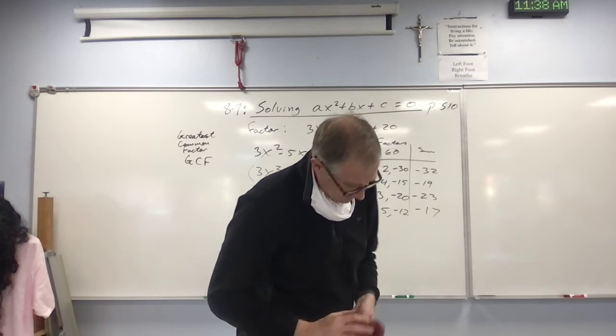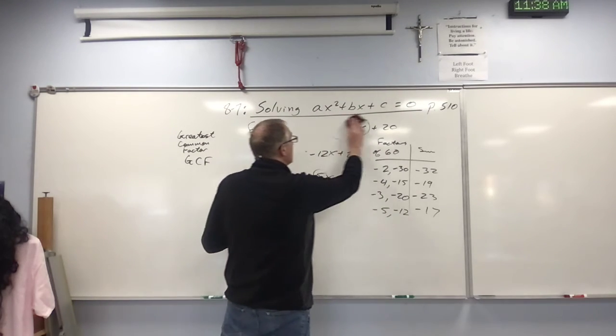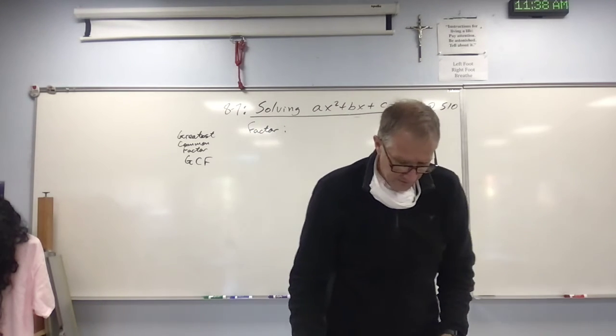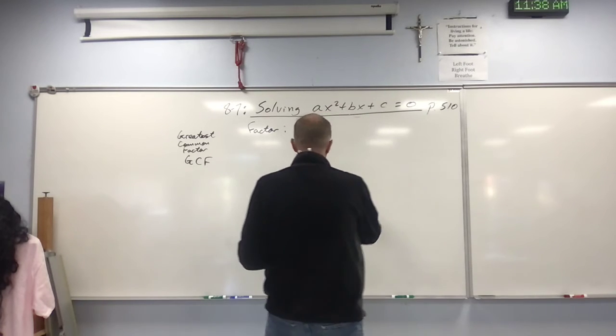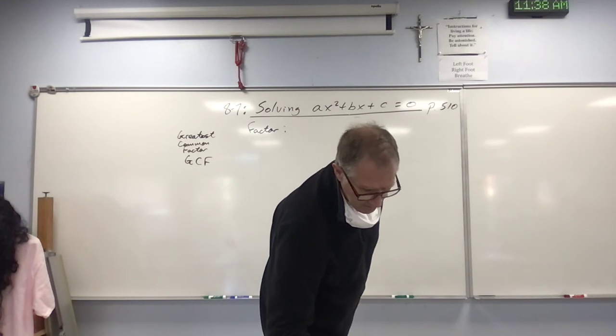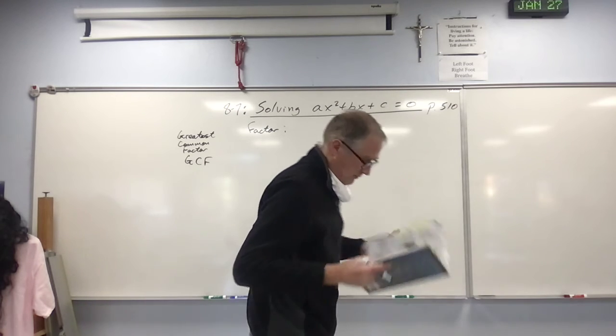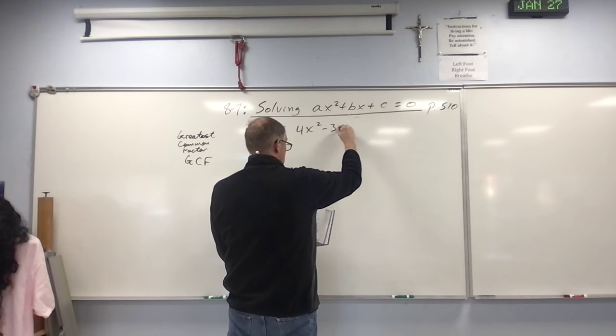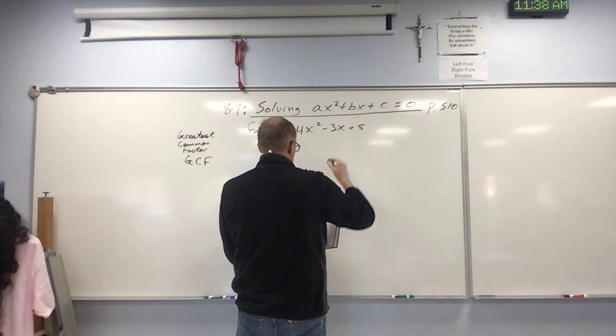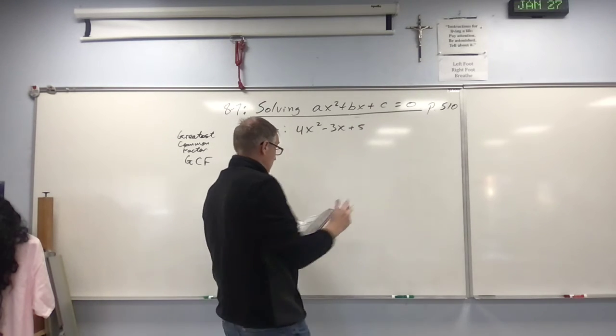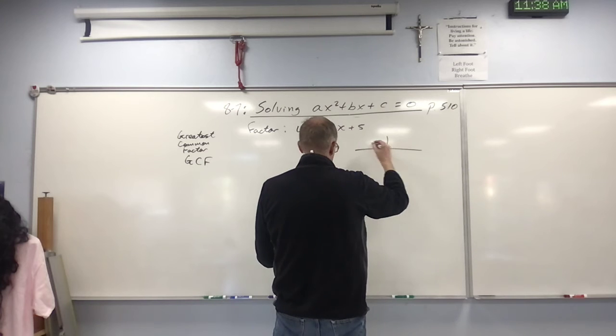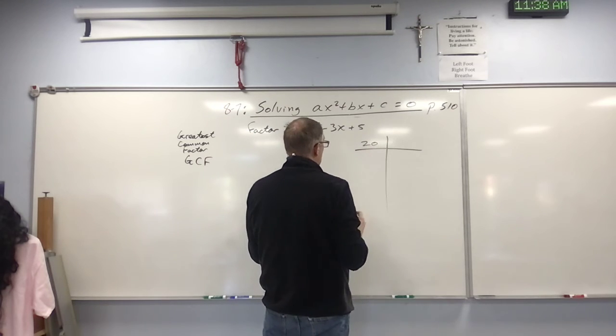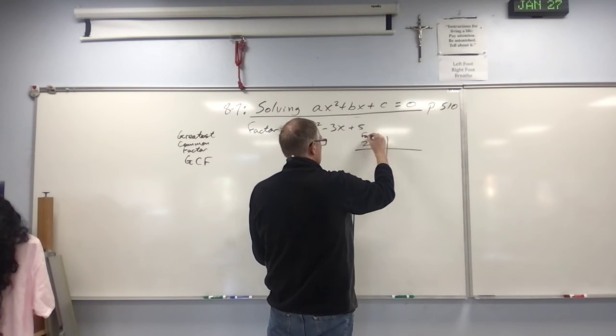Now I'm on page 512. Sometimes you run into this situation right here where things don't factor. It's called a prime polynomial. If you have - I'll just use your example right here to make this point - if you have 4x squared minus 3x plus 5, and you try to factor this thing. Here's your table. We've got multiply a and c, so 4 times 5 is 20. So that's the factors. What are the factors of 20?